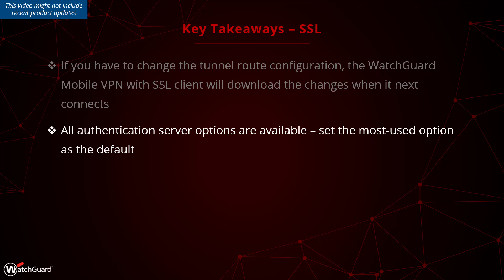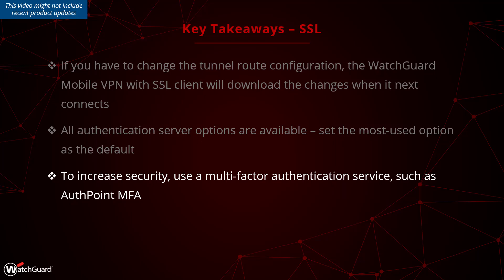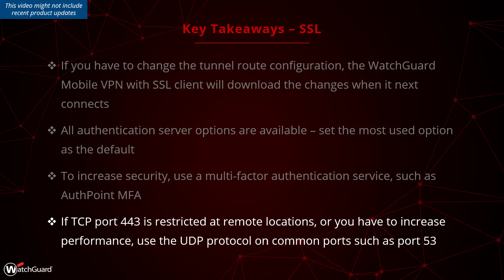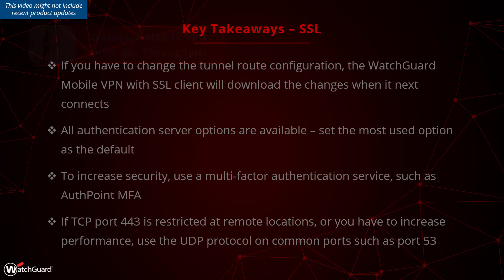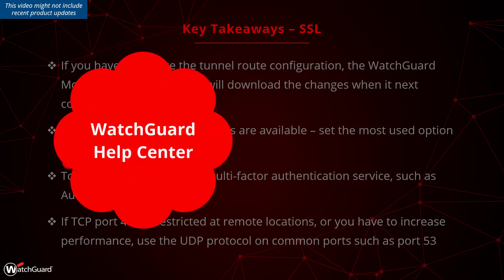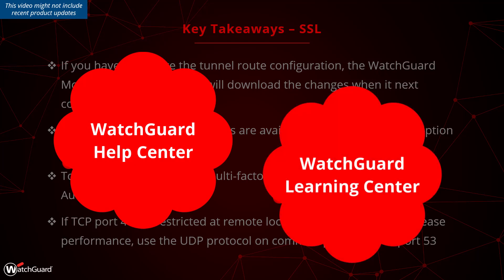All authentication server options are available, yet remember to select the most used option as your default. I recommend using multi-factor authentication such as AuthPoint MFA to increase security. If for some reason remote locations restrict TCP port 443, go back to the settings and use the UDP protocol on common ports such as port 53. You can find more details on this in the tutorial video on Optimize Mobile VPN with SSL throughput. You can find more details in the WatchGuard Help Center, and you may also be interested to have a look at the courseware available in the WatchGuard Learning Center.